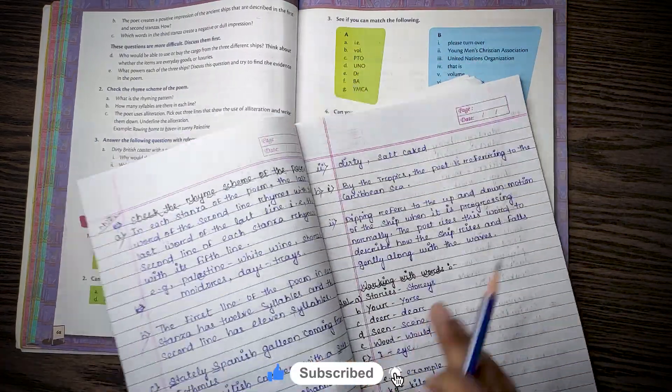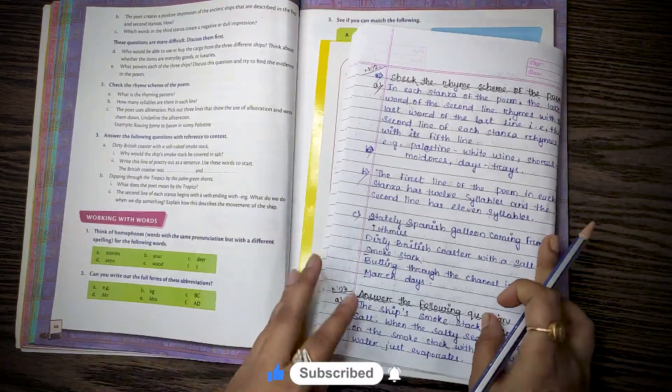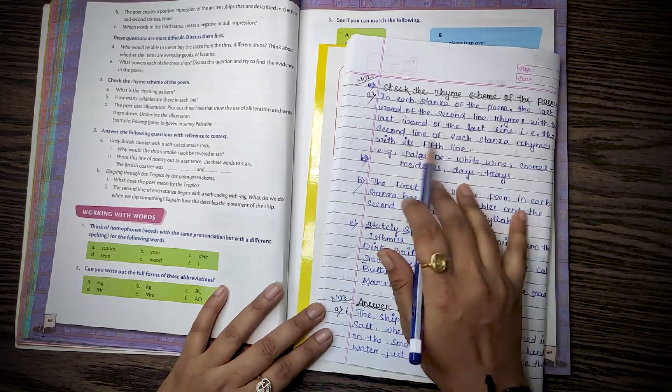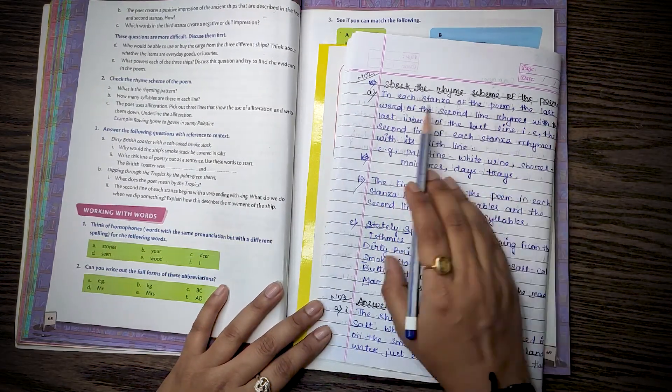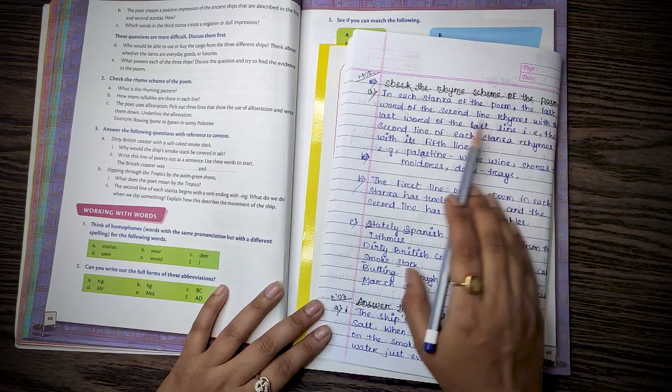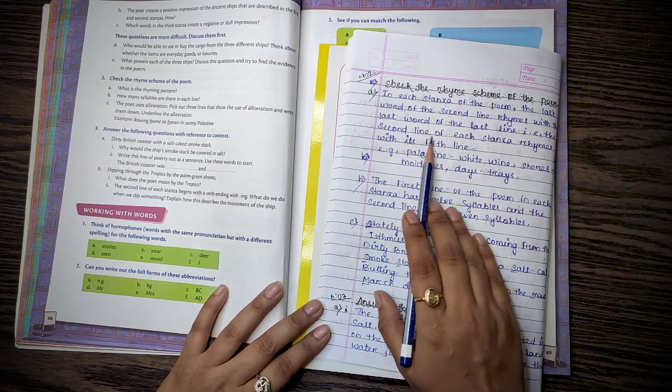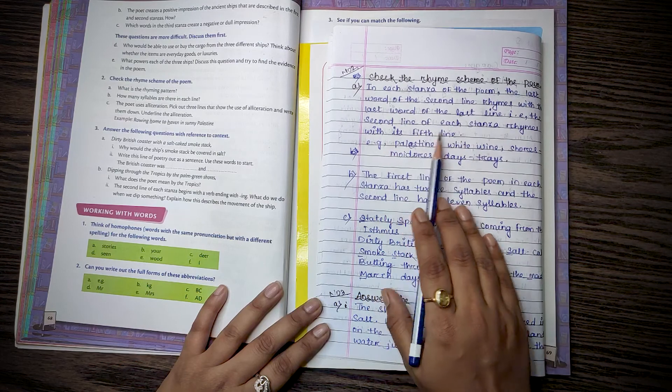Then number 2. Check the rhyme scheme of the poem. Number A. What is the rhyming pattern? In each stanza of the poem, the last word of the second line rhymes with the last word of the last line. That is, the second line of each stanza rhymes with the fifth line.